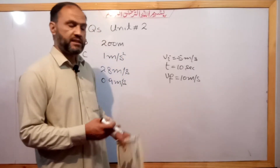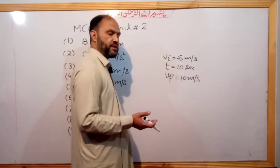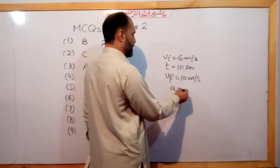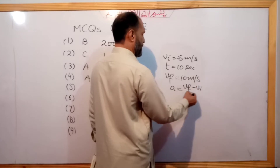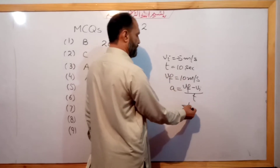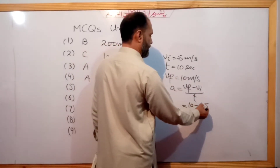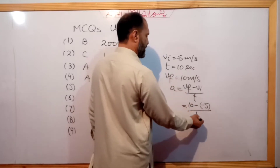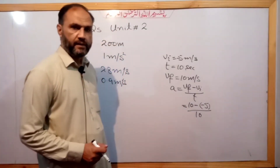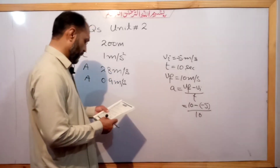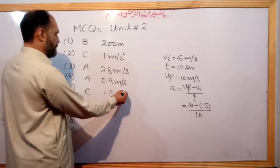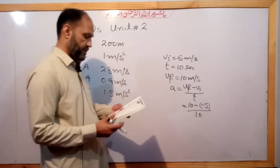The acceleration formula from the first equation: Vf equals Vi plus at, so a equals Vf minus Vi divided by t. Change in velocity is 10 minus negative 5, which is 10 plus 5 equals 15. Divided by time of 10 seconds gives 1.5. So option C: 1.5 meter per second squared acceleration.